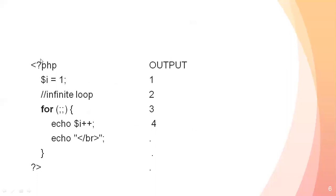Next, I have an example of an infinite for loop. To create an infinite loop, I declared $i equal to 1 outside. In the for loop, I just use semicolons without any initialization, condition, or increment/decrement inside the parentheses — just semicolons within the brackets.